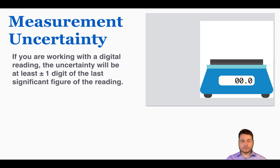If you're working with a digital reading, the uncertainty will be at least plus or minus one digit of the last significant figure of the reading. As an example, we can imagine we have this digital scale. And right away, I can see that the scale goes down to the tenths spot. There's one number after the decimal.